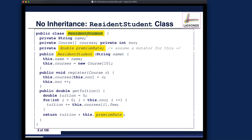Here's a question: how would the NonResidentStudents class look? Very similar or very different? The answer is very similar. The only things that change from ResidentStudents to NonResidentStudents are the class name, premium rates become discount rates, the constructor name, and the base tuition is multiplied by discount rate instead. This means we end up with lots of duplicate code.